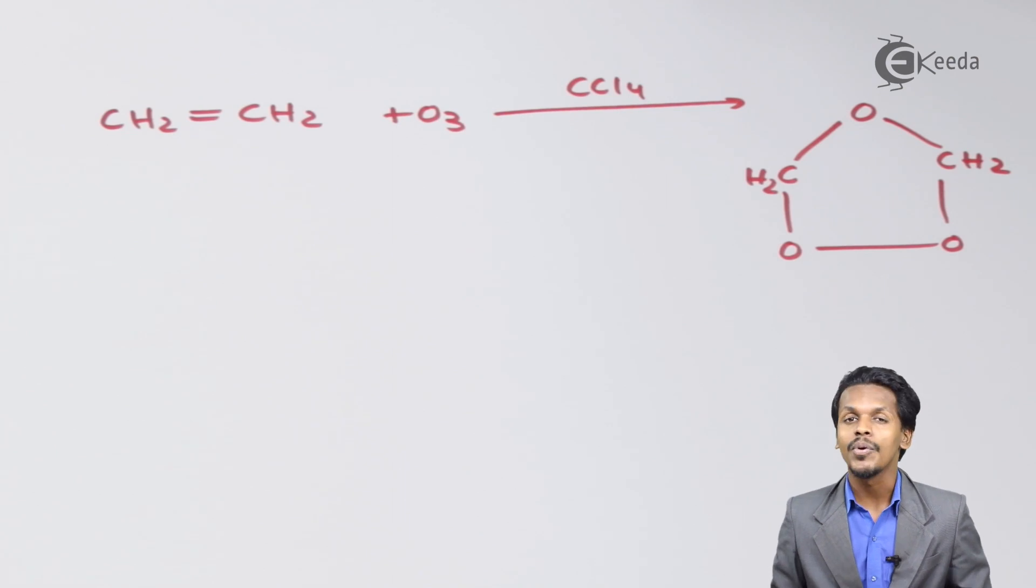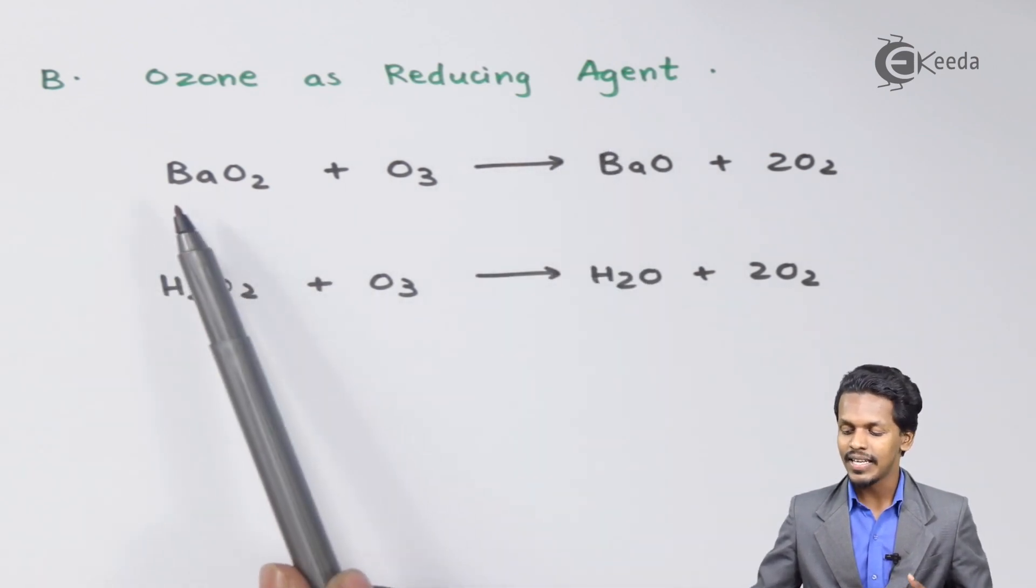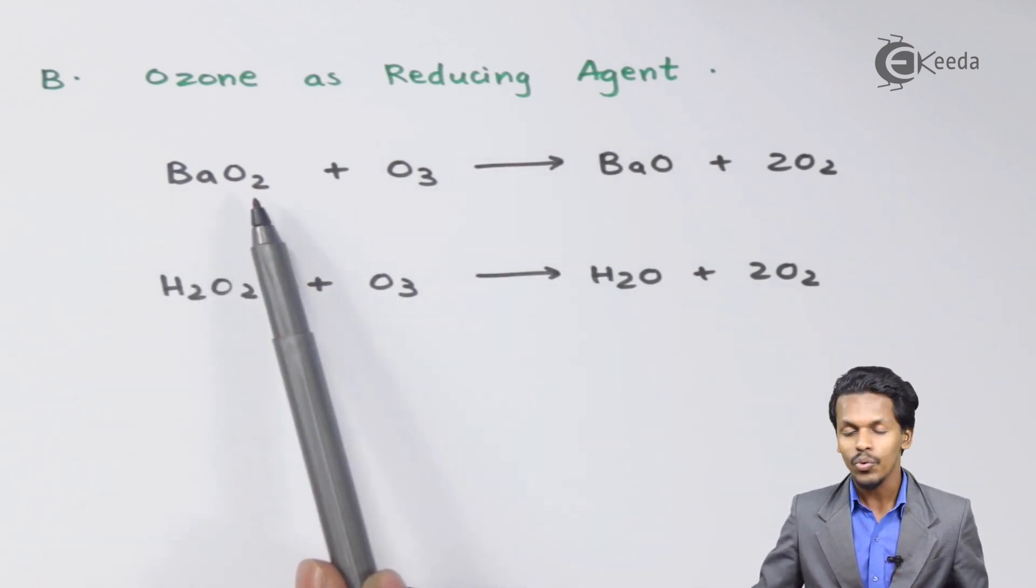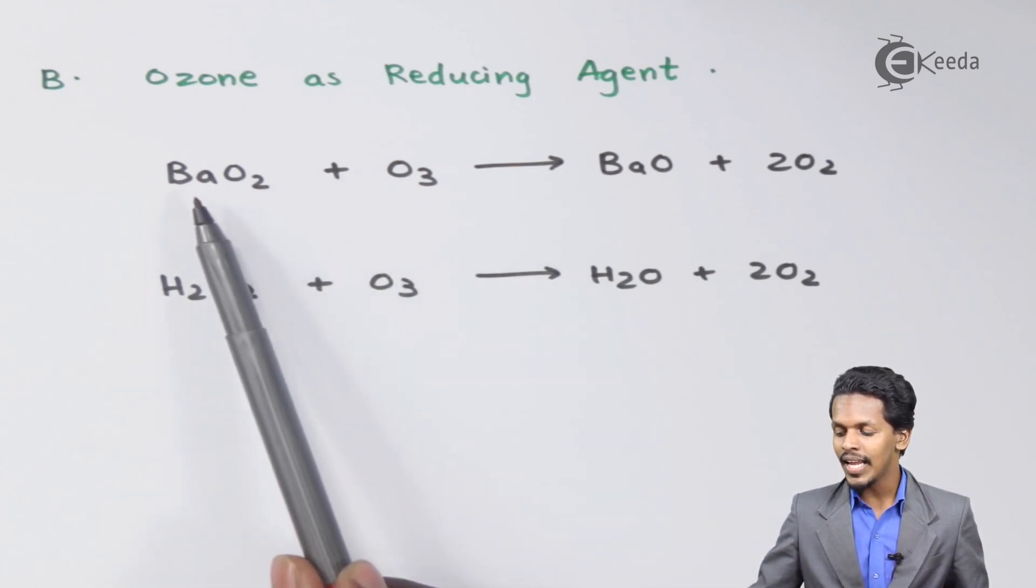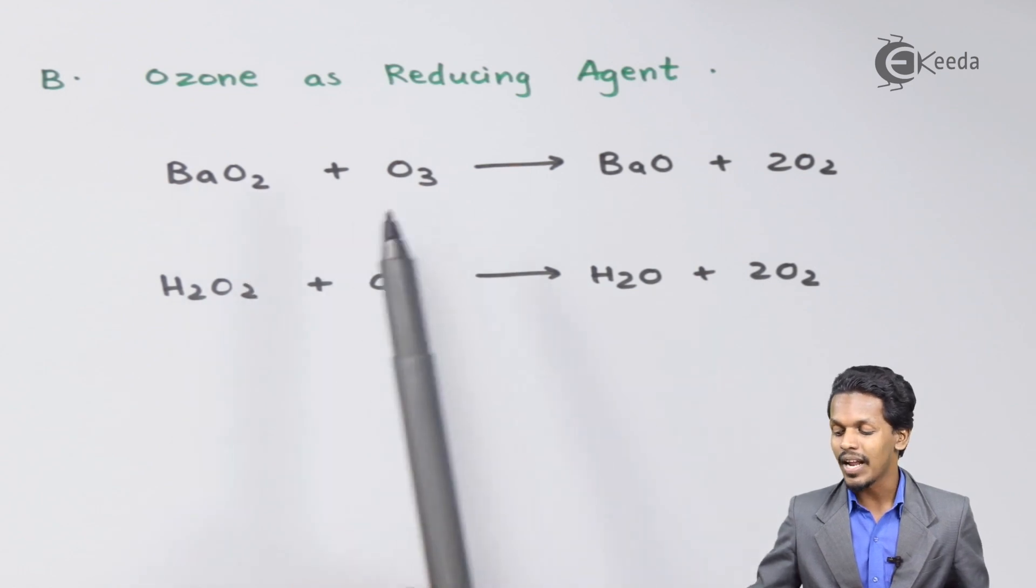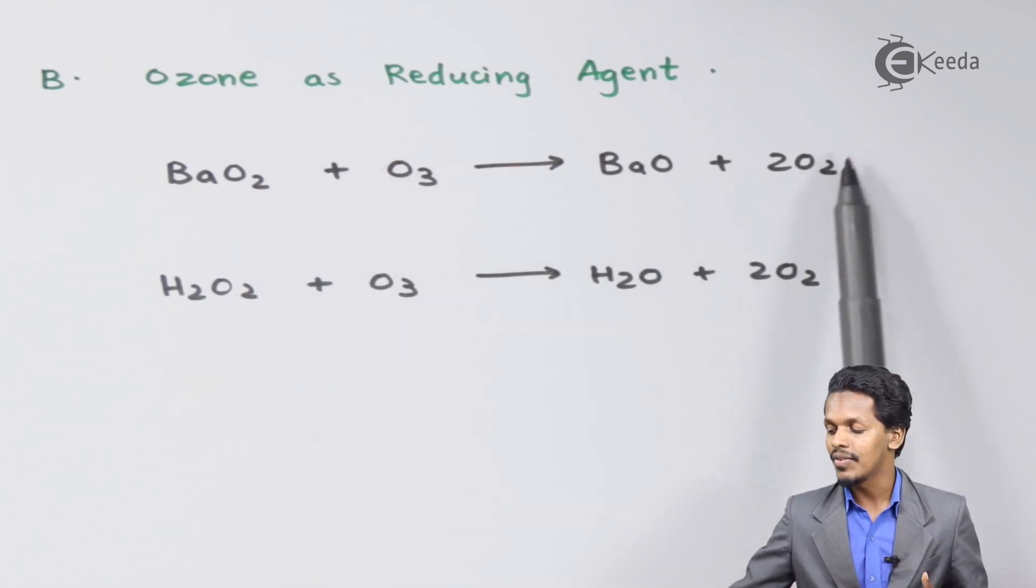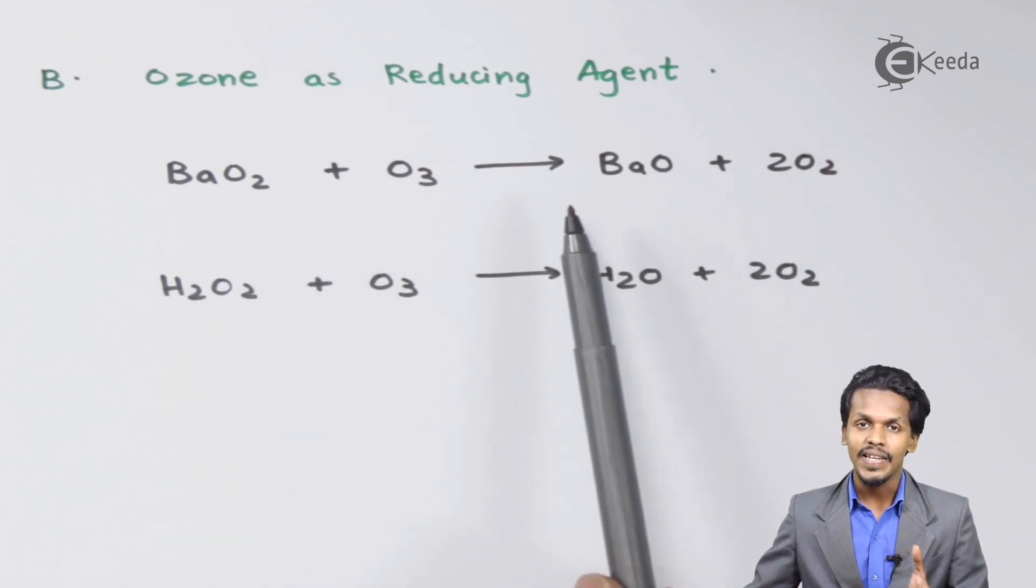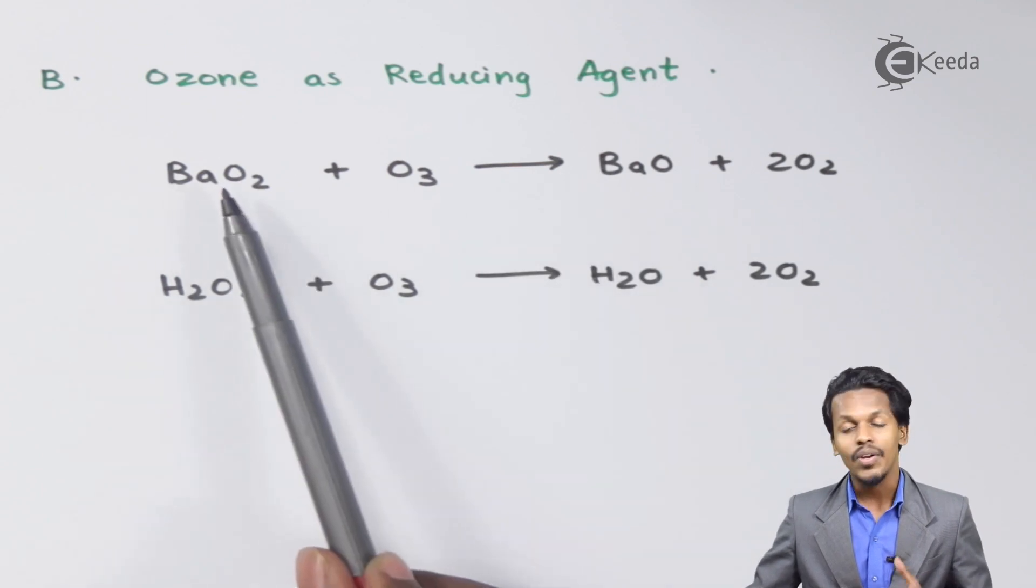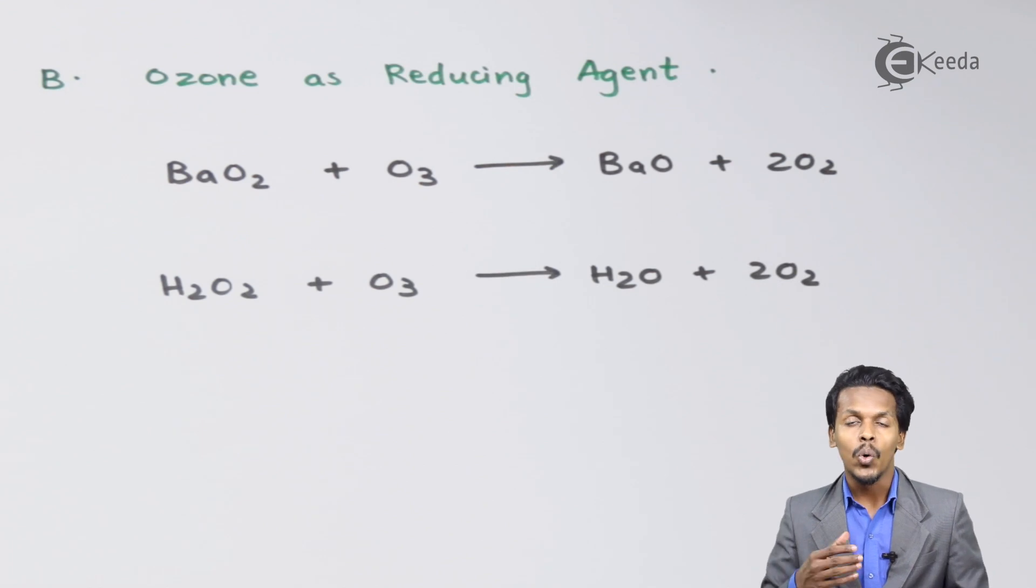Now let me talk about the property of ozone as a reducing agent. Ozone can act as a reducing agent also. Here is an example: barium dioxide, BaO2, if treated with O3, we can find that barium is associated with two oxygen atoms, but after the reaction, barium is only associated with one oxygen atom with the liberation of two moles of O2. We can easily judge that this kind of reaction is a reduction reaction where one oxygen atom has been eliminated from this molecule. This is another property of ozone—it acts as a reducing agent.